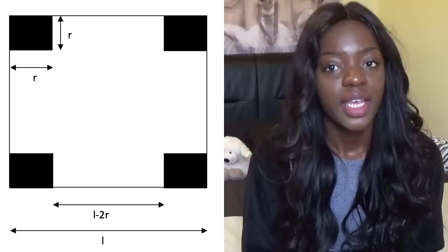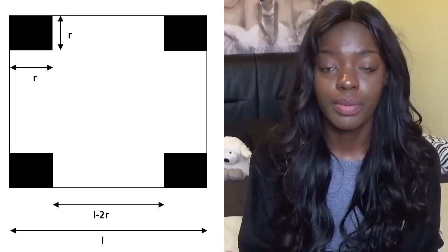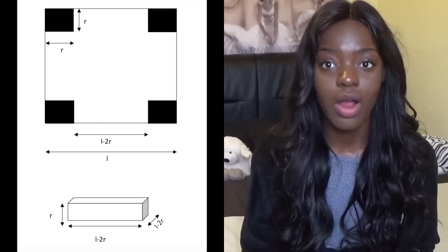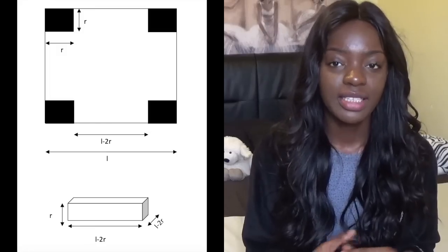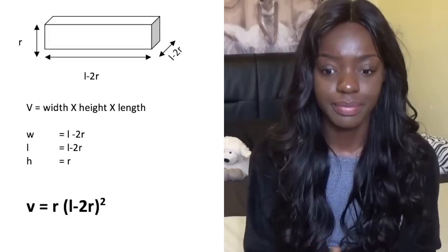I drew a square piece of paper with both sides labeled L, then cut squares of side r from each corner. From this picture you can work out the dimensions when folded: the base has dimensions (L − 2r) by (L − 2r) and the height is r. So the volume of the box is V = r(L − 2r)².